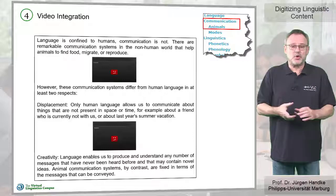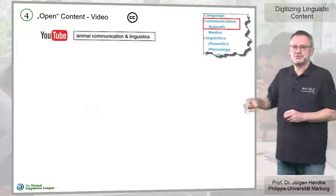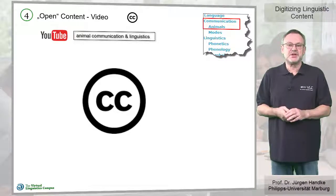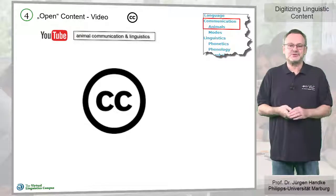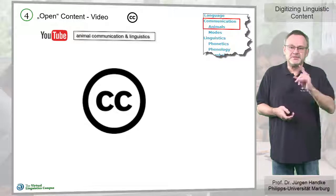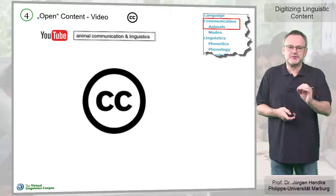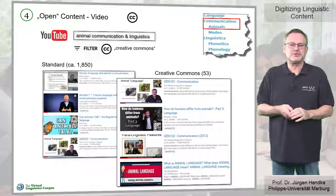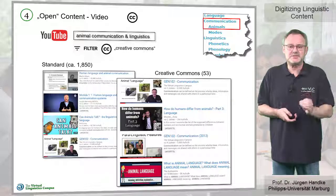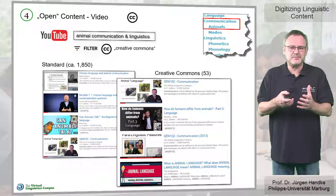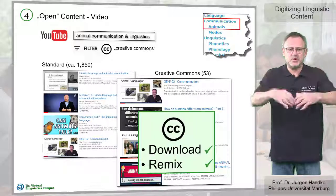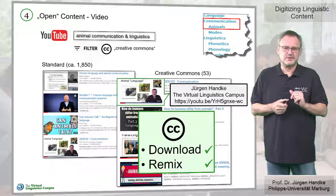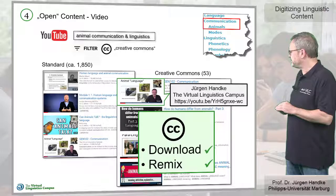By far the best option are those videos that have been given the Creative Commons license by their developers and can now freely be used. Even though the YouTube search filter 'Creative Commons' will dramatically reduce the number of videos, we can now be sure that these videos cannot only be shared and embedded, but can even be downloaded and remixed. The only condition: the original author has to be mentioned.